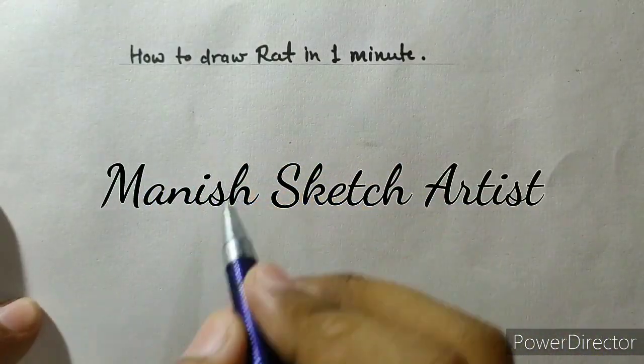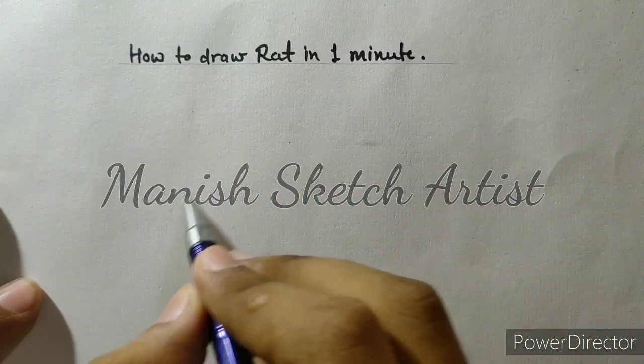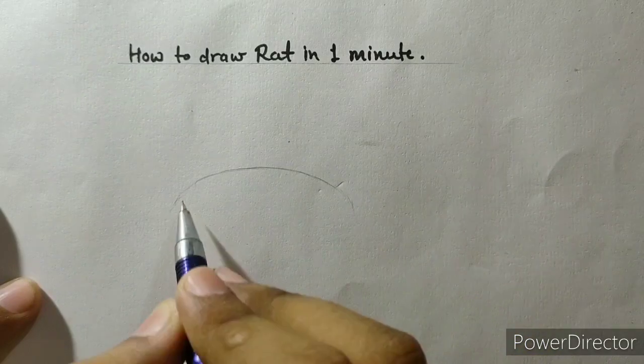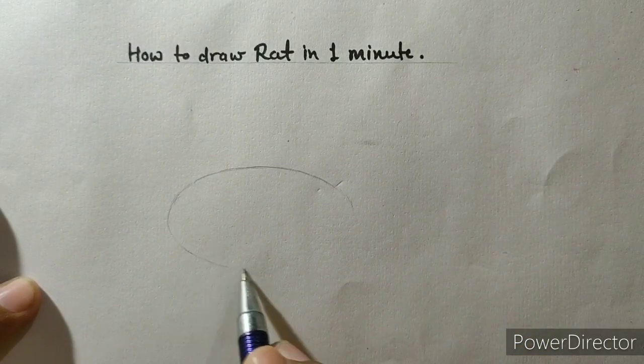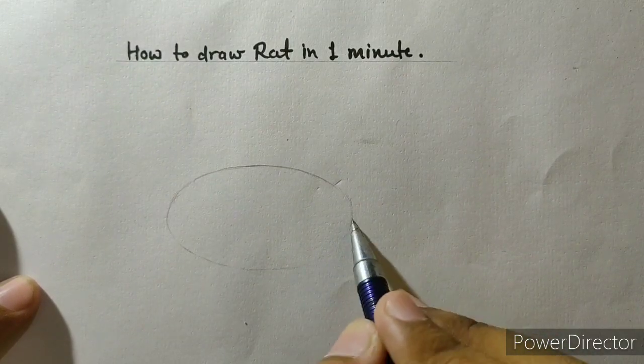Hey guys, welcome back to my channel. Today we will see how to draw a rat in one minute. So first of all, you have to draw an oval for its body.